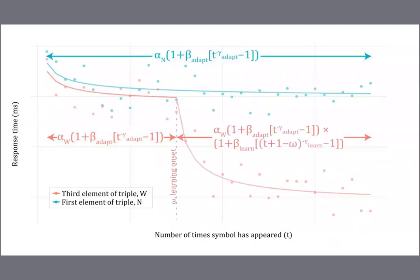On the other hand, if the beta and gamma for the adaptation curve don't fit well, we allow the model to classify the individual as a learner. This adds a few parameters to the red curve: omega is the onset of learning — the dashed vertical line — the point at which the adaptation curve no longer fits. After this point, we multiply the adaptation curve by another power function with two additional parameters: another beta and another gamma, distinct from the adaptation beta and gamma and specific to the learning process. Beta-learn, between 0 and 1, controls the amount of learning the second curve shows, and gamma controls the rate. The only difference between the adaptation and learning functional forms is the omega parameter, which acts as an offset along the x-axis for the learning curve.